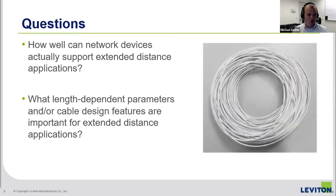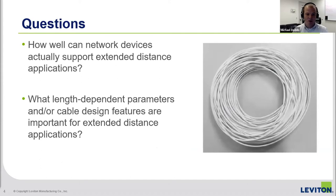We also know that there is mitigation built into Layer 1 chipsets, because like all standard-compliant components, Layer 1 chipsets operate with at least some margin. So on paper, extended length applications seem possible from a link segment perspective. The question we're looking to answer is how well actual network devices support these extended distance applications, and what length-dependent parameters or cable design features are important for extended distance applications. We primarily looked at insertion loss and propagation delay, as those are closely tied to the length of a link segment.